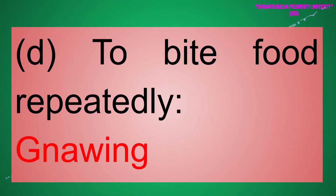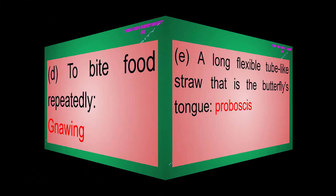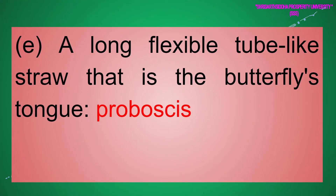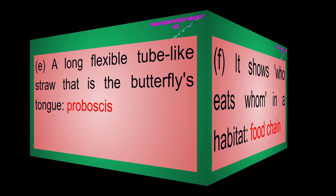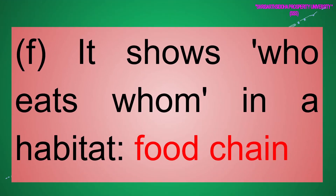(d) Animals that bite food repeatedly — Gnawing. (e) A long flexible tube-like straw that is the butterfly's tongue — Proboscis. (f) It shows who eats whom in a habitat — Food chain.